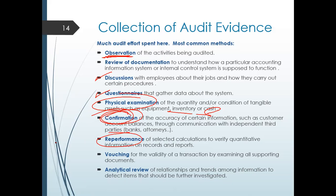Next, reperformance — the auditor repeats a process if not satisfied, including reperformance of calculation, reperformance of the specific process, or reperformance of counting. Next, vouching — you identify the validity of a transaction by examining all the supporting documents. Are all these sales from the sale of your inventory real and existing? And you have your analytical review — you review the relationship and trends among information to identify items that should be further investigated, similar to a sensitivity analysis.